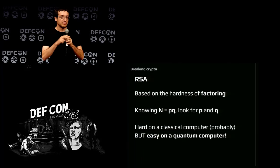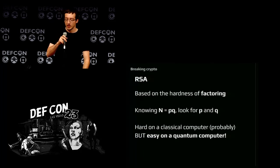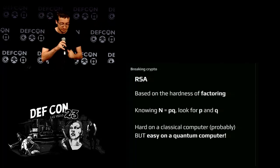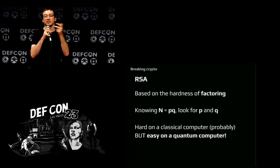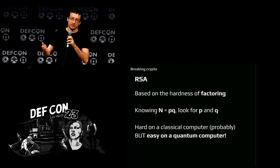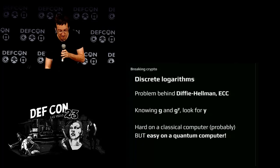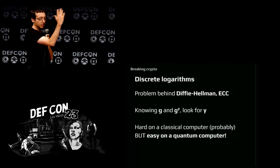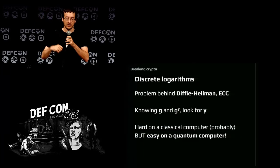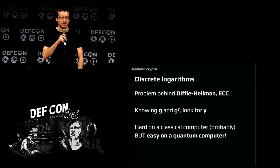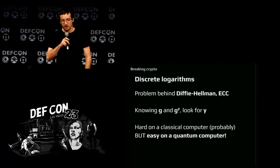On a quantum computer, factoring is easy thanks to an algorithm by Peter Shor, which uses a quantum Fourier transform to find a period in a function. What's nice is that Shor's algorithm isn't specific to factoring — it applies to a whole class called hidden subgroup problems. The discrete logarithm problem, which underlies Diffie-Hellman — you have G, you know G to the power of Y, and you must find Y — is another instance of this class and is equally easy on a quantum computer.